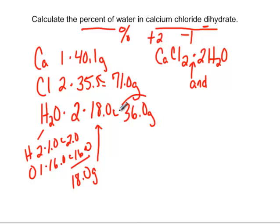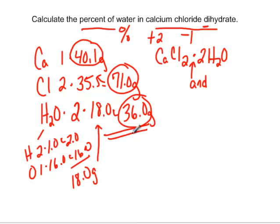So far, we have the 36 grams of water, the 71 for the chlorine, and the 40.1 of the calcium. And if we add that all together, we're going to get our grand total for this compound. If we have one mole of calcium chloride dihydrate, it has a mass of 147.1 grams. So this is our total.